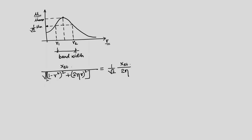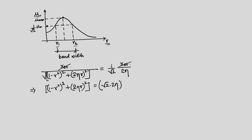Solving the expression, we cancel x_st from both sides, giving: √[(1 − r²)² + (2ηr)²] = √2 × 2η. Squaring both sides eliminates the square root on the left, and on the right we get (√2 × 2η)².